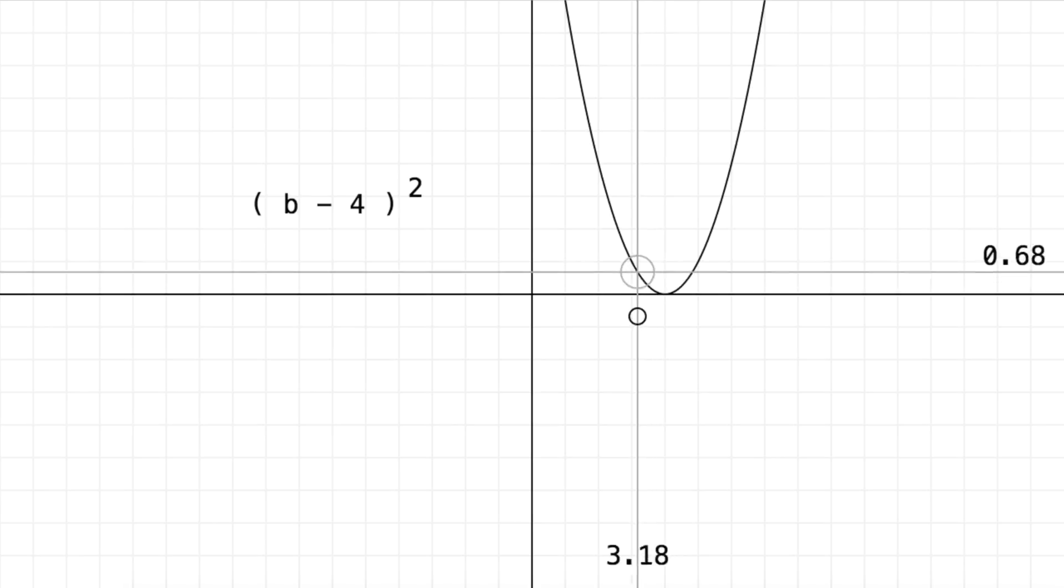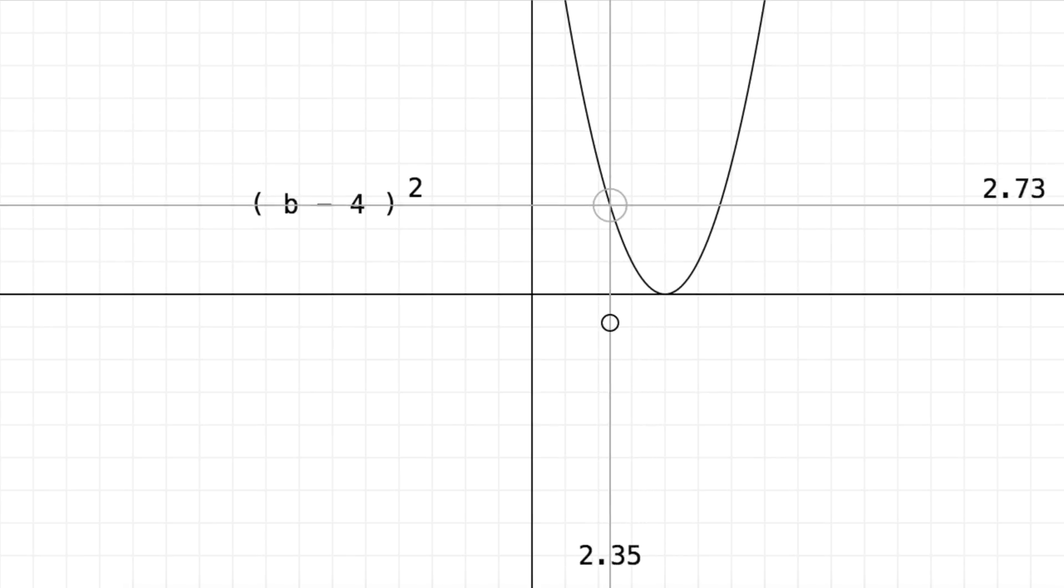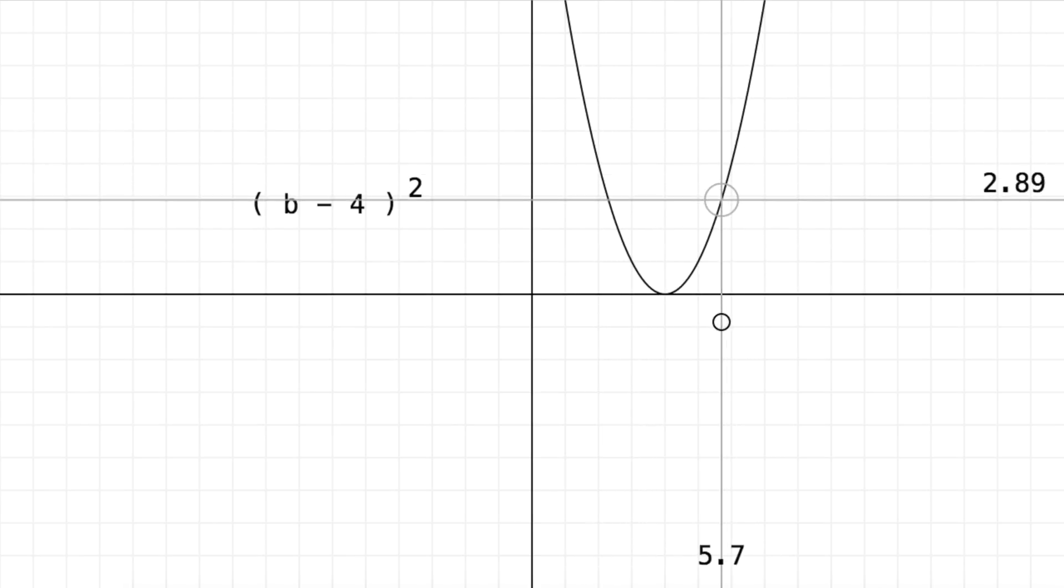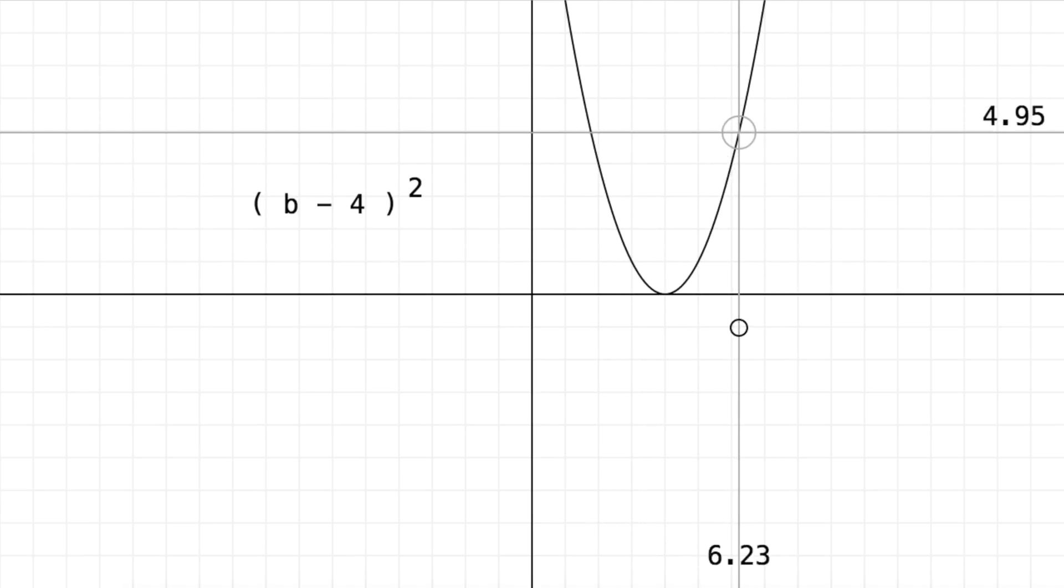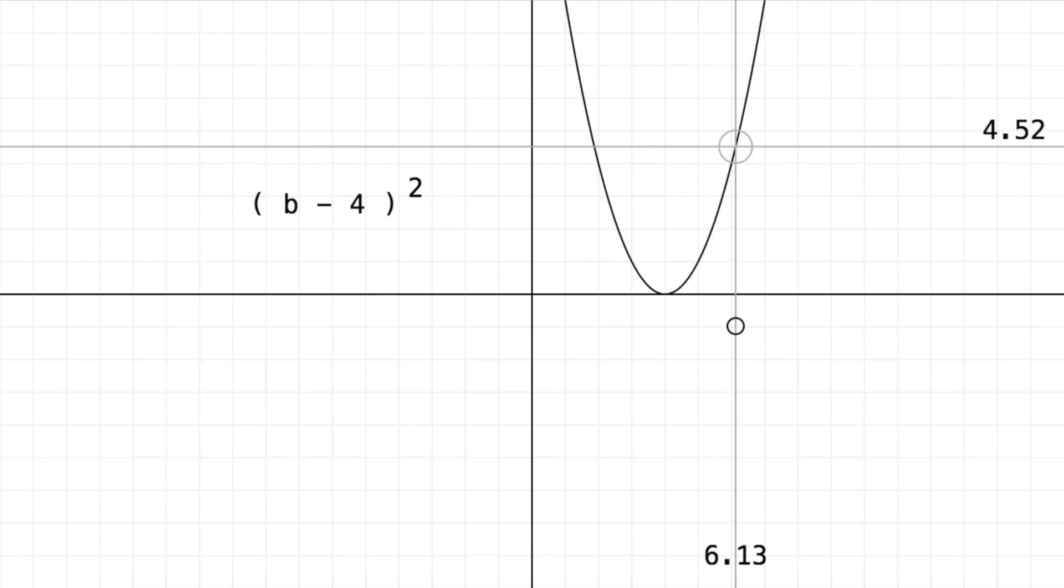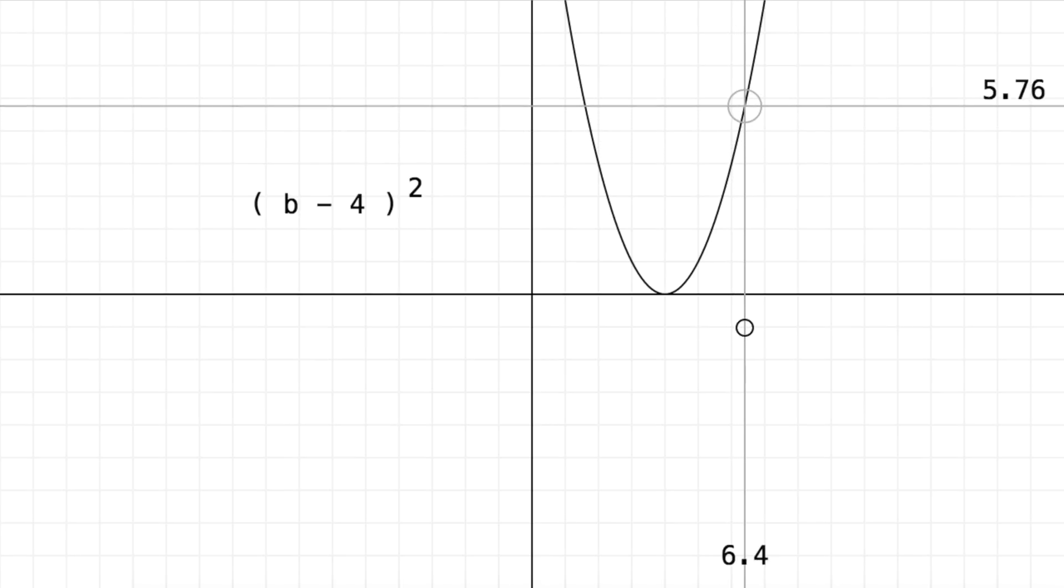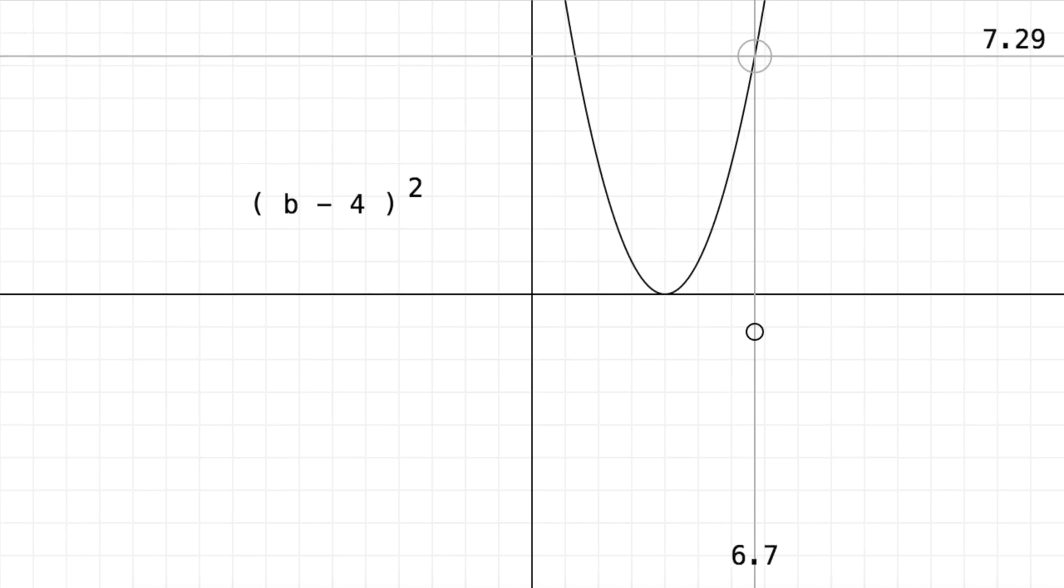The cost is a positive number anytime b is not equal to our target value. And as b gets further and further away from our target the cost goes up and up and up.